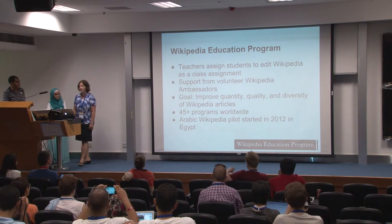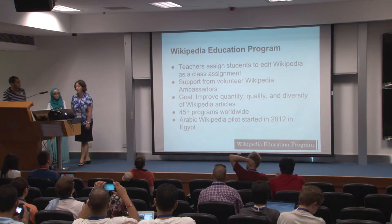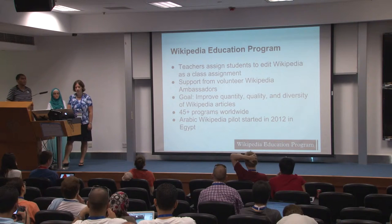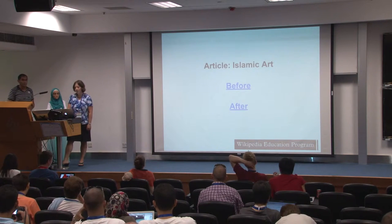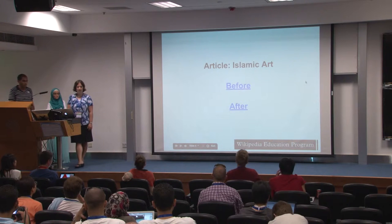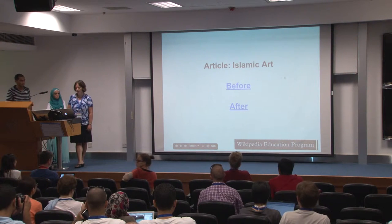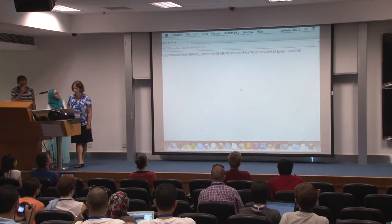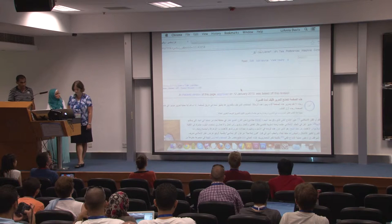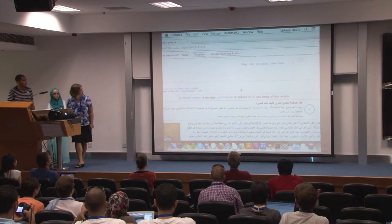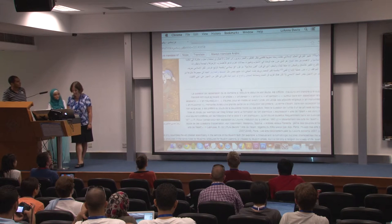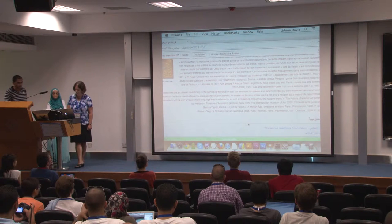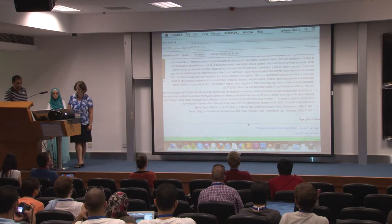The pilot I am talking about today is our Arabic Wikipedia pilot. It started in 2012 in Egypt at two universities — Einstein's University and Cairo University, both in Cairo. Let me show you an example of what the students are actually doing. This is an article a student worked on last term on Islamic art. This is the version of the article before the student worked on it. The article is very short, just about one paragraph long, with four references.